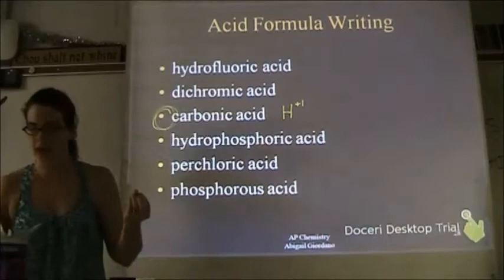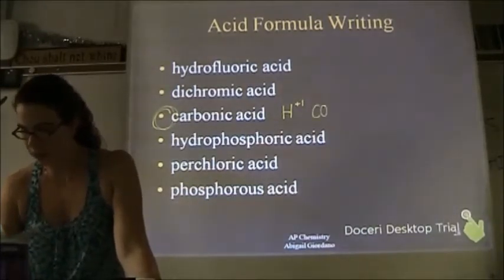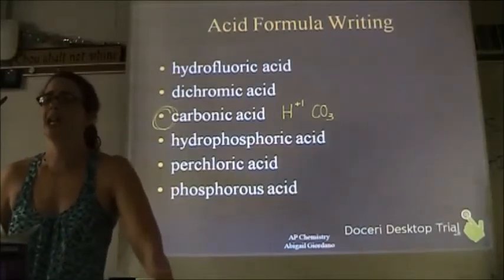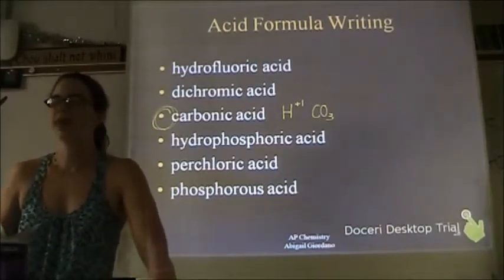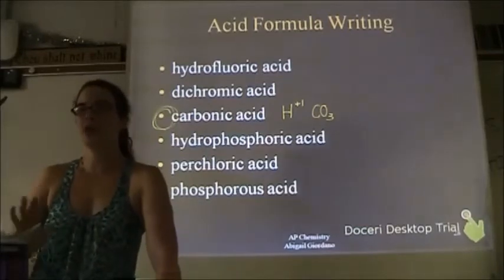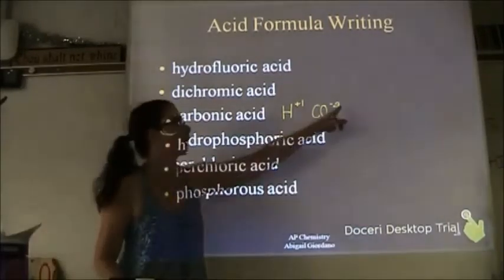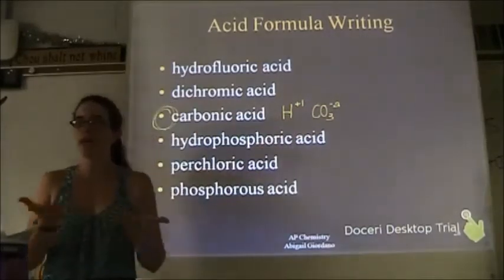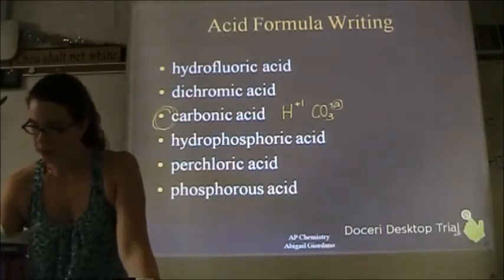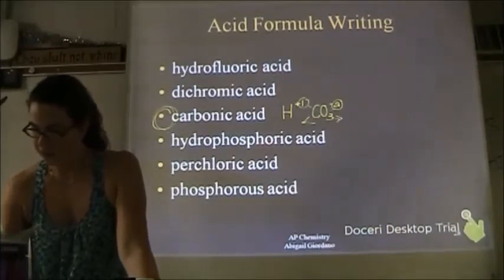What polyatomic ion is this telling us? Carbonate. And if you don't have it memorized, you can look on your polyatomic ion sheet. What is the charge of carbonate? Minus two. So you say: these charges do not add up to be neutral. You do what I call the swap and drop.